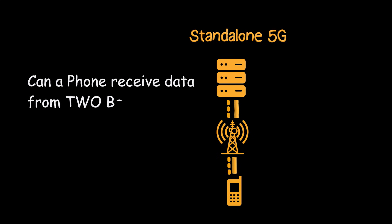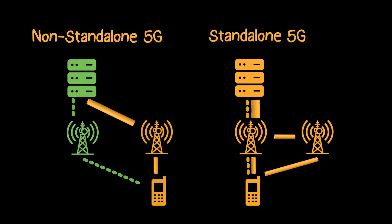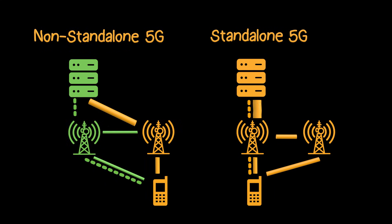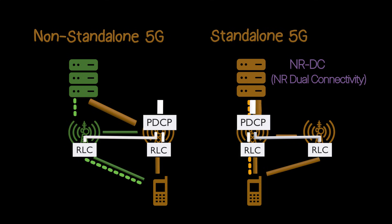Can a phone receive data from two base stations simultaneously? Yes, it is possible both in standalone and in non-standalone, boosting data rate. In standalone, we call it NRDC. In both scenarios, the 5G base station's PDCP layer usually splits the data — it sends some to its own RLC and the rest to the other base station's RLC.